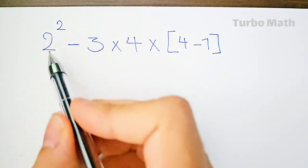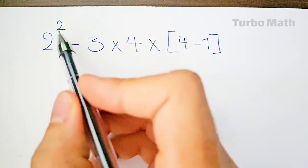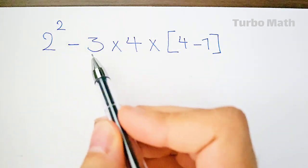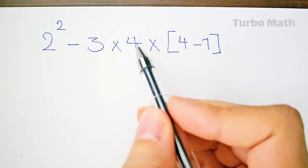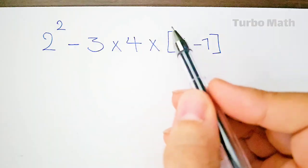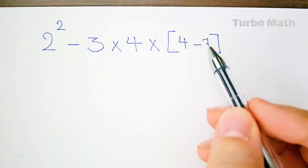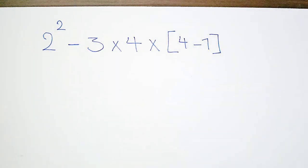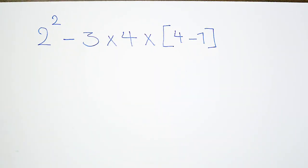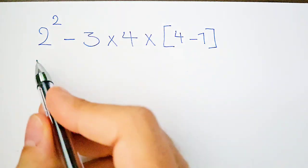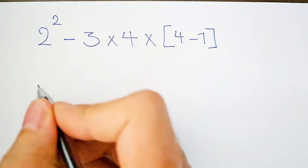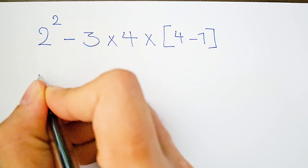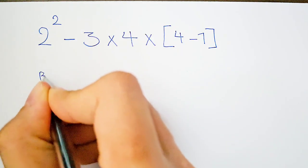Can you find the answer of this question? Hi guys and welcome to Turbo Maths channel. The expression is: 2 to the power of 2, minus 3 times 4 times open bracket 4 minus 1 close bracket. To solve this question we need to follow a rule.